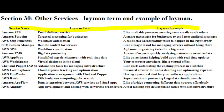AWS OpsWorks is like having a personal chef for your software applications. It helps you automate the setup, deployment, and management of your applications, making it easier to maintain and scale them without spending too much time in the kitchen — i.e., dealing with complex configuration and management tasks.